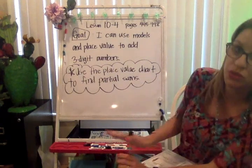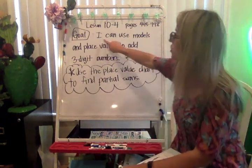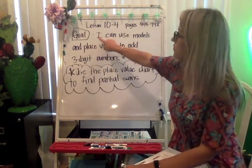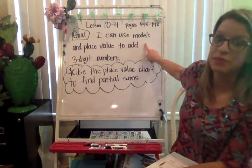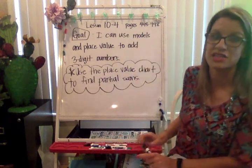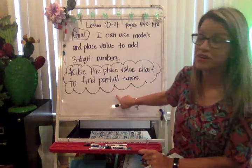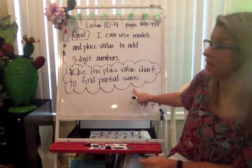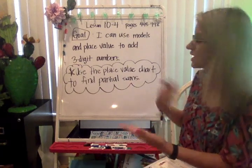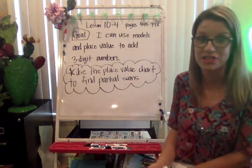We have two goals that we're going to be working on today. You need to be able to, after this lesson, you will be able to use models and place value in order to add three-digit numbers. The different thing about this lesson is that we're going to be using our place value chart to find the partial sums so that we can add things together in an easier way.